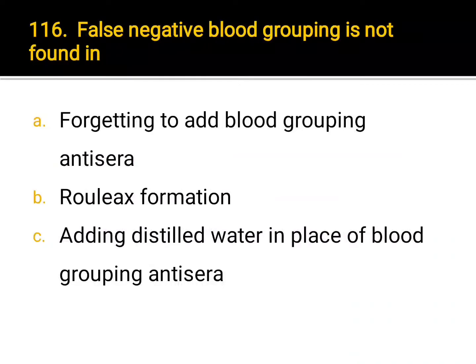False negative blood grouping is not found in: A. forgetting to add blood grouping antigen, B. rouleaux formation, C. adding distilled water in place of blood grouping antibody. Correct answer: B. Rouleaux formation.